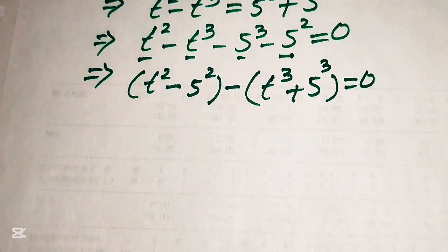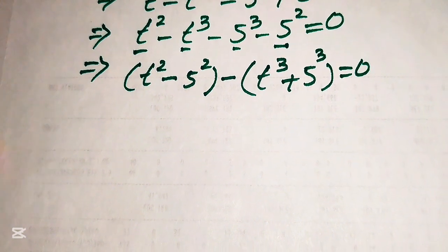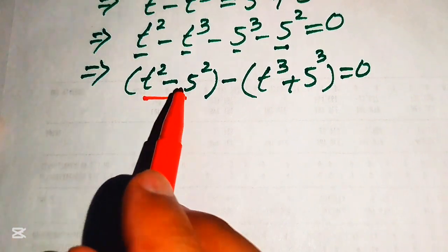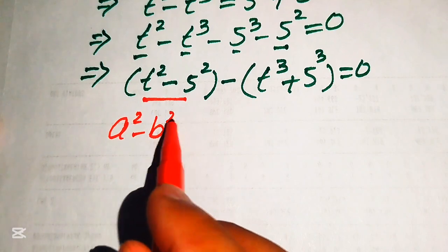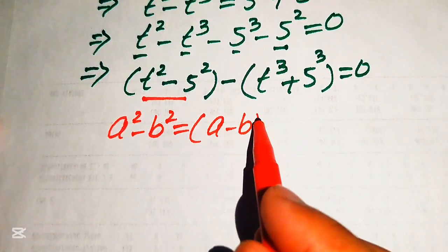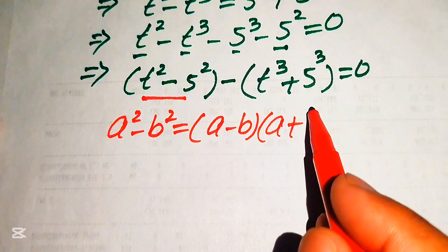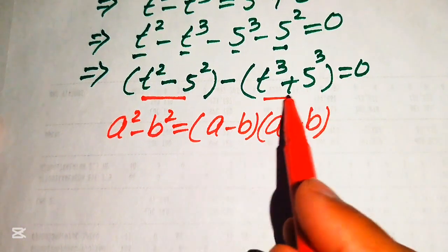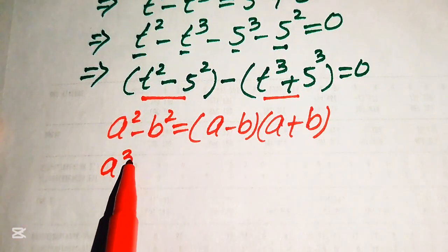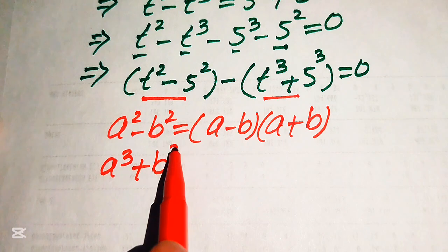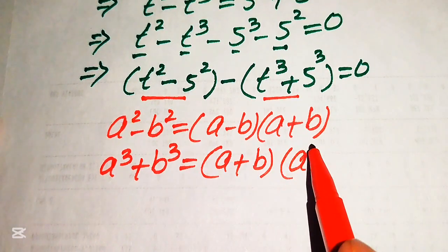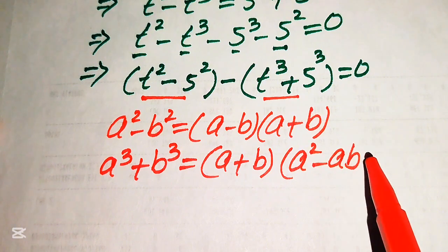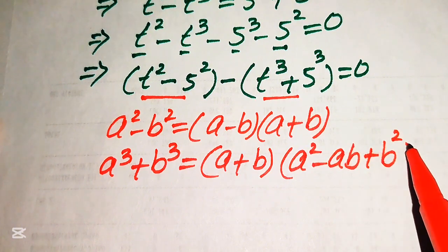We need two formulas to move forward. For the first factor we apply: a squared minus b squared equals (a minus b)(a plus b). For the second factor we apply: a cubed plus b cubed equals (a plus b)(a squared minus ab plus b squared).